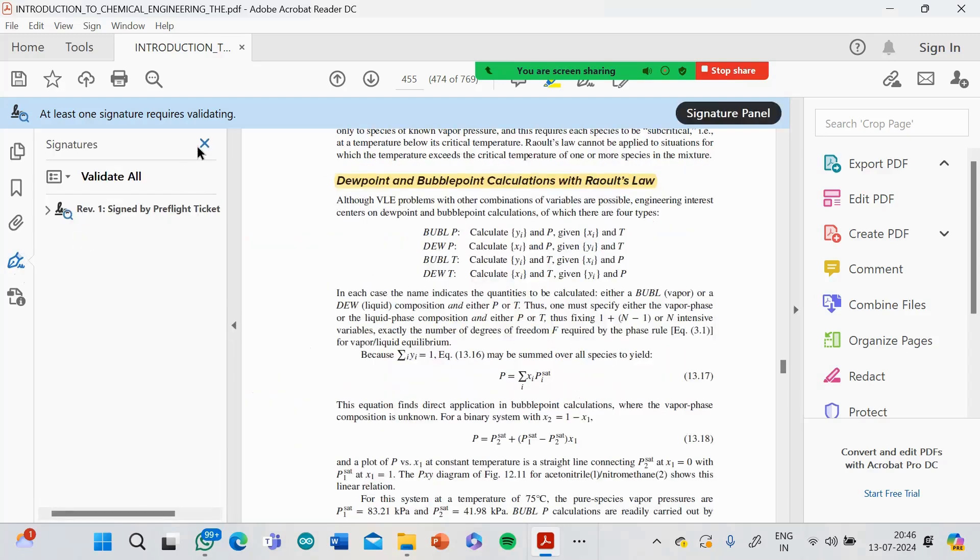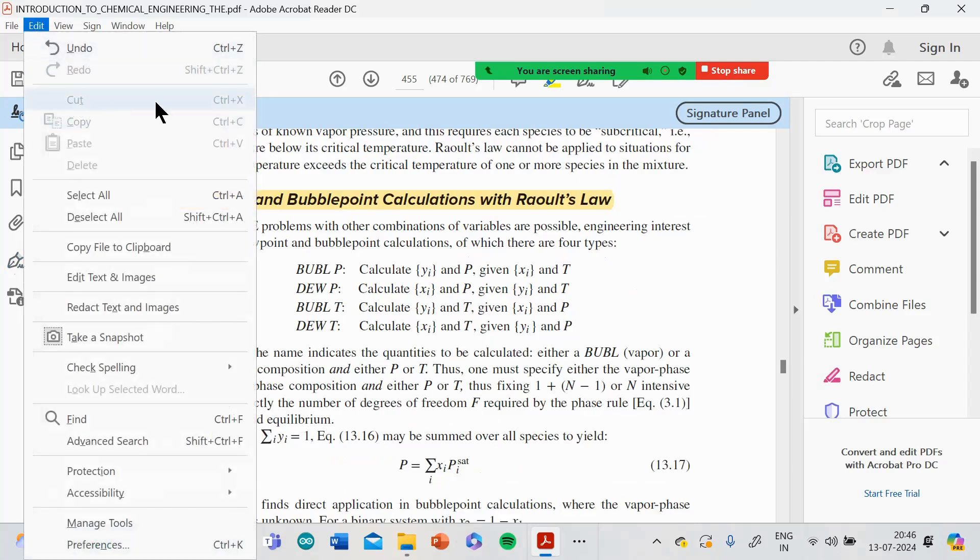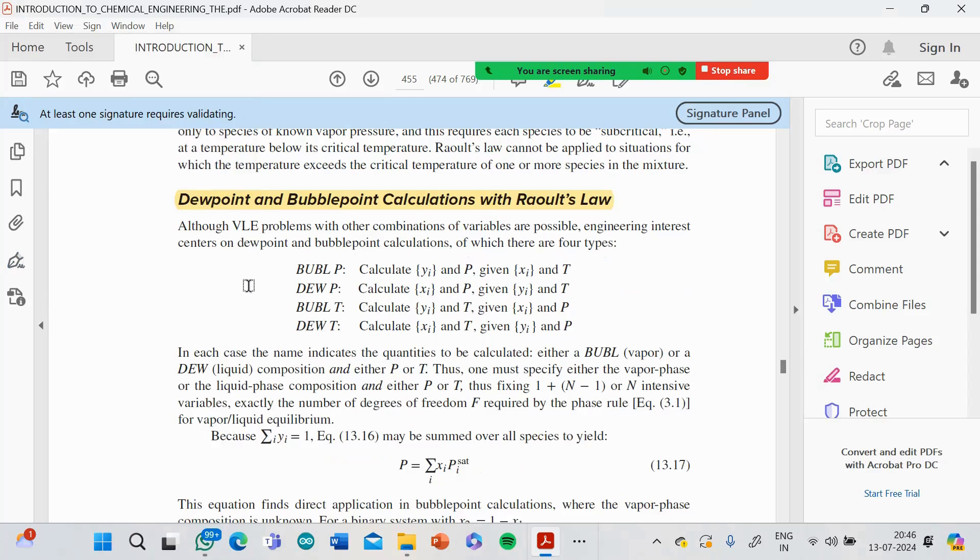This Raoult's law, or you know, if the system is not ideal, it can take another gas law such as Van der Waals equation, Peng Robinson. In fact, we have to look at that.